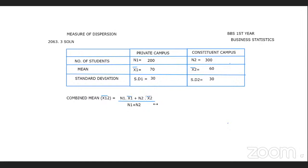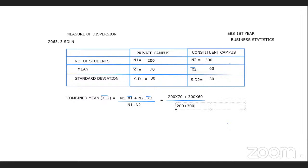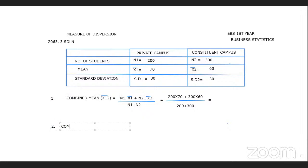Applying the combined mean formula: 200 into mean1 (70) plus 300 into mean2 (60), divided by 200 plus 300. The combined mean works out to 64.